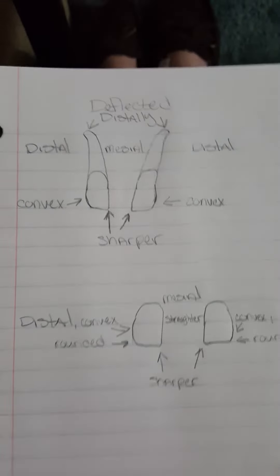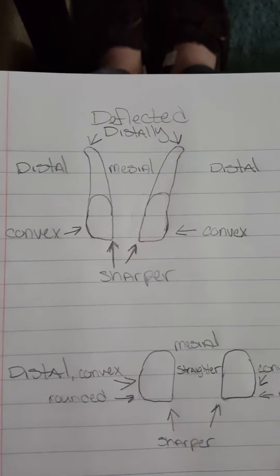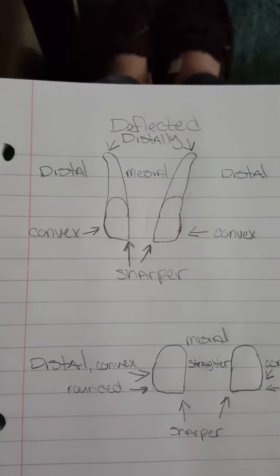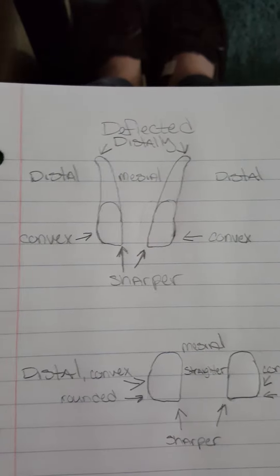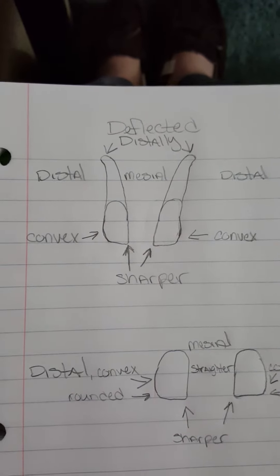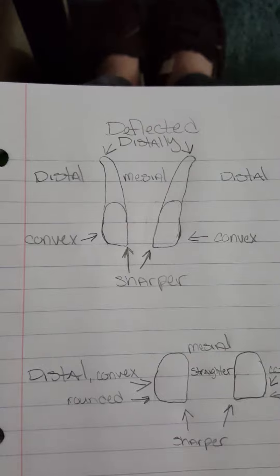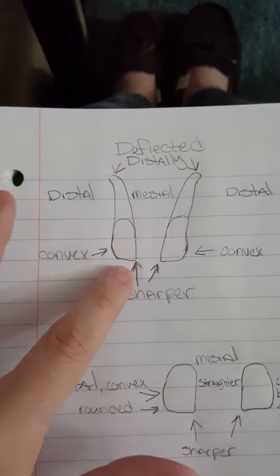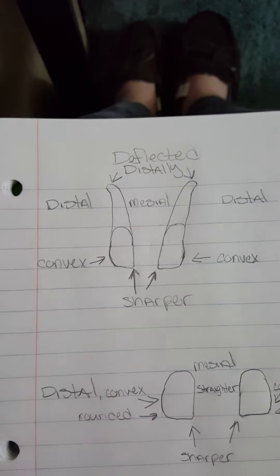So first I'm going to start with the lateral teeth. I've got my little drawing here. The first thing is that the mesial incisal edge is sharper on the lateral incisors. The distal edge is more curved and then the sides of it is convex or curved.